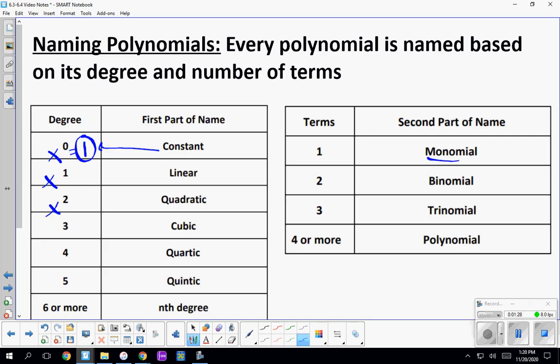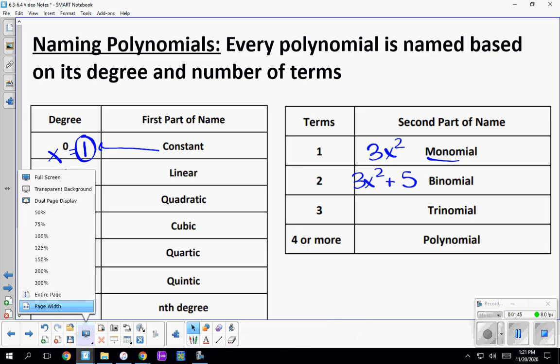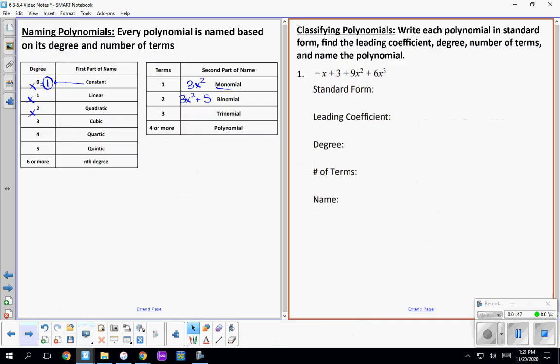So again, mono meaning one, so one term. Something like that is one term. A binomial is when we have something separated by addition or subtraction, so that is a binomial. Trinomial, we would add in a third term. So keep that in mind when we're classifying polynomials. I'm going to keep that up on the board while we go through the next problem here.